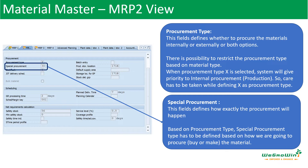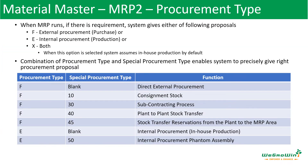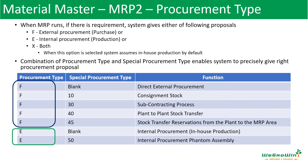In this case, it is a procurement type. According to the transparent procurement type, this is the component directly. This is the production order — the production order will be generated.